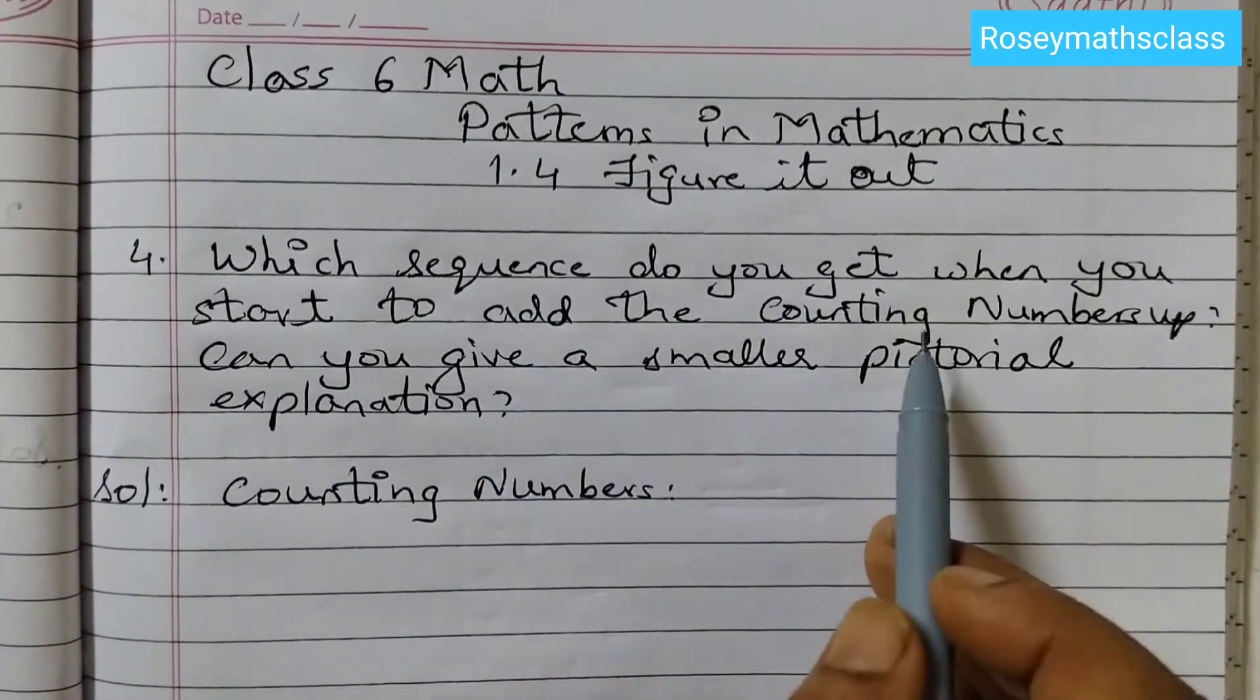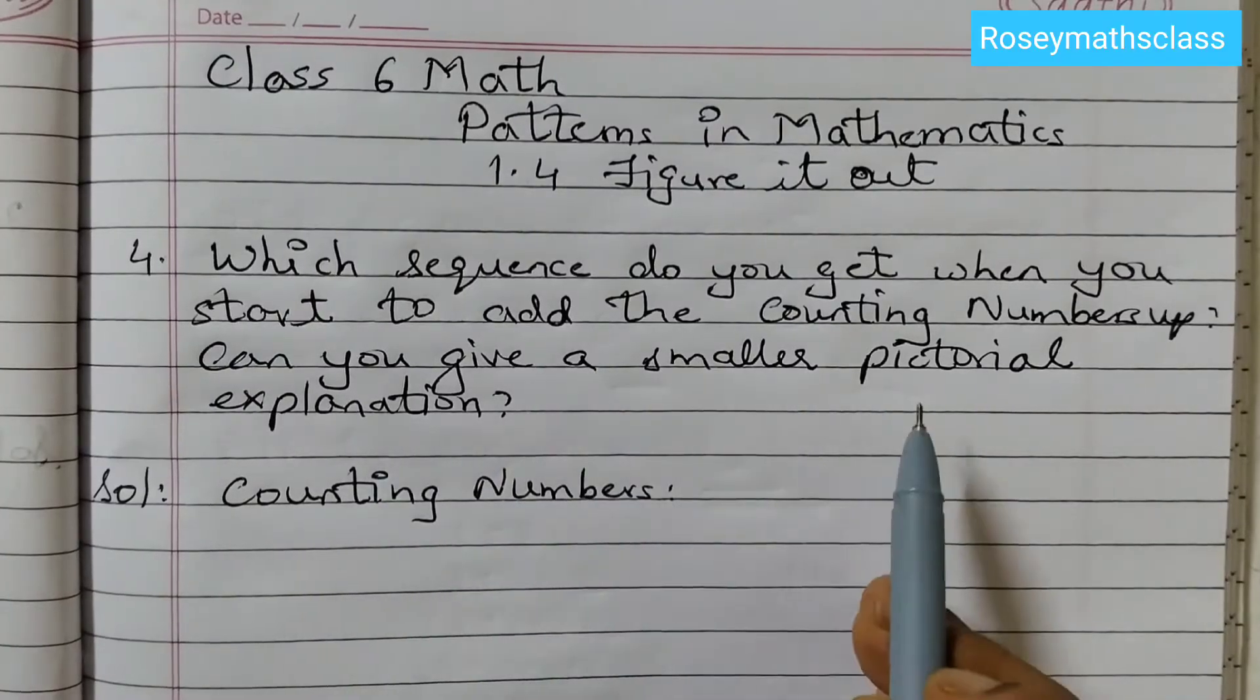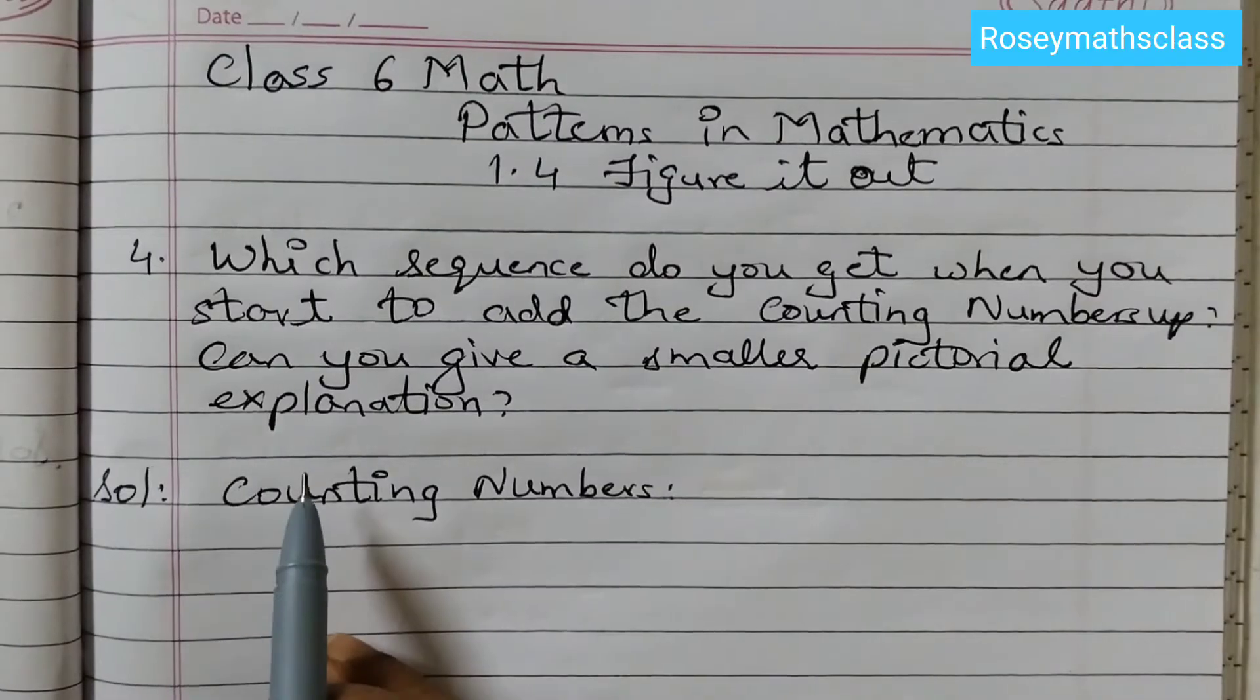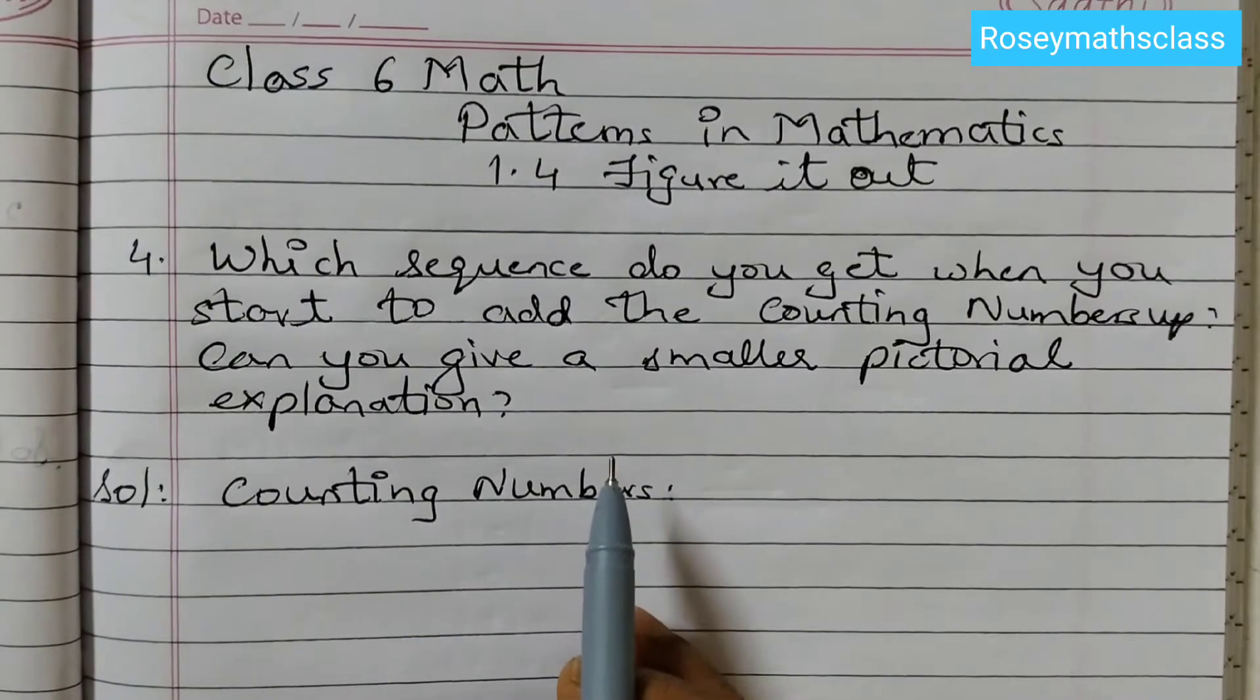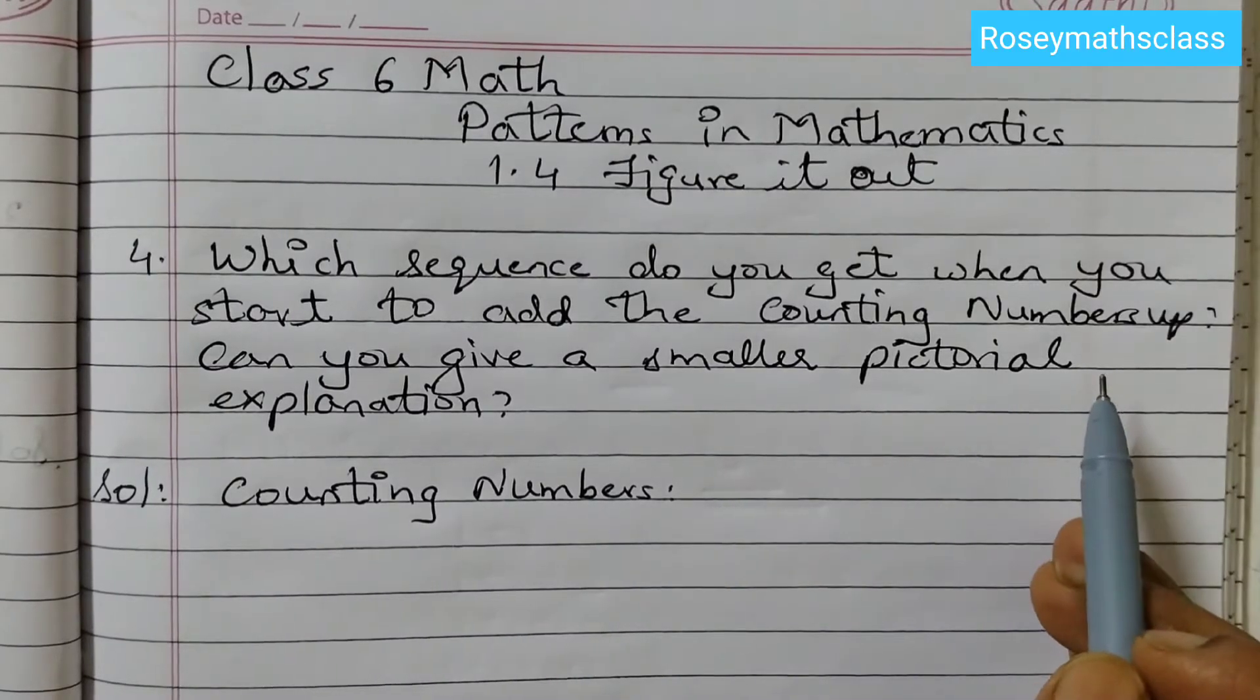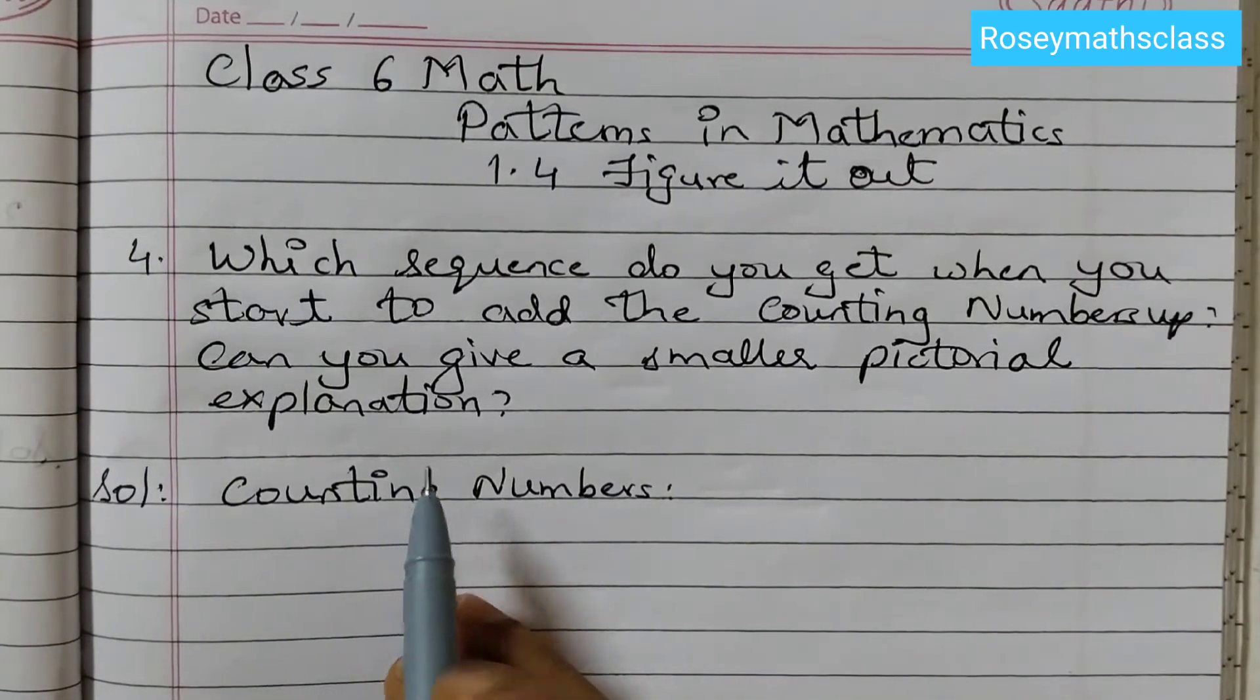Which sequence do you get when you start to add the counting numbers up? Can you give a smaller pictorial explanation? So in this question they have asked what happens when we add the counting numbers up and they want a dot representation for that.